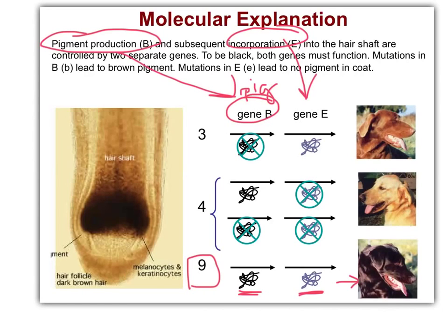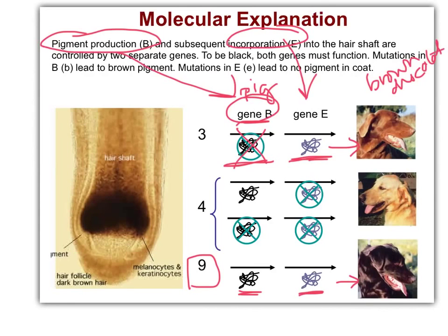If you have no gene B — poor pigment production — but you can still incorporate pigment into the hair shaft, you get the chocolate lab. There are other pigments made elsewhere, so none of the black pigment gets added, but brown or chocolate pigment from another pathway does get incorporated via gene E. If both black pigment and incorporation are present, it still looks black — there's no visible difference.